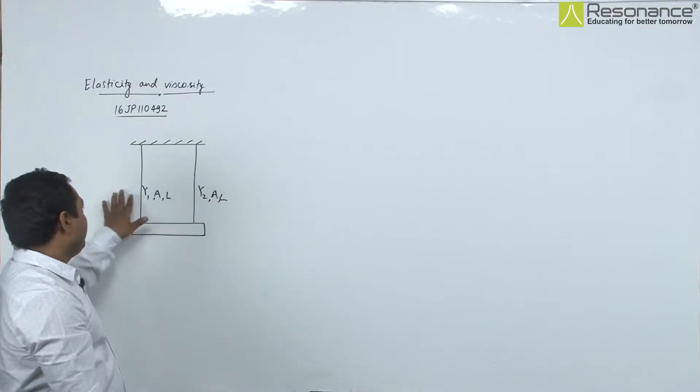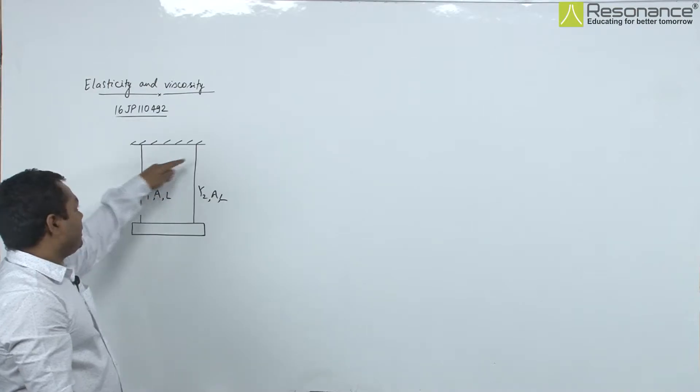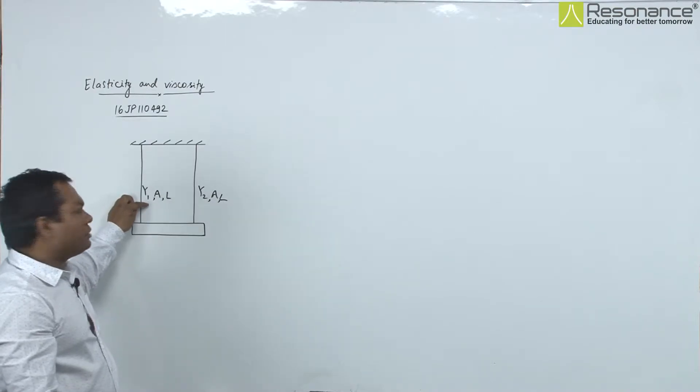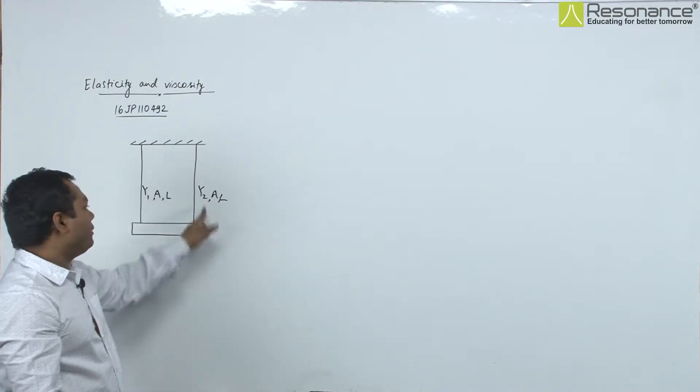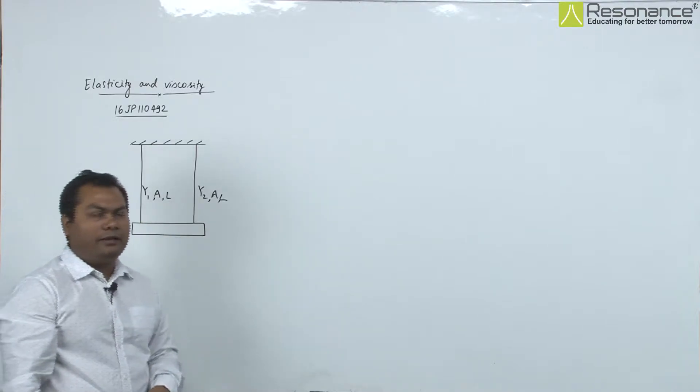In this setup, we have two wires, this and this, whose Young's modulus is given as y1 and y2. The area is same and length is same.